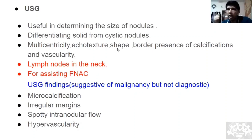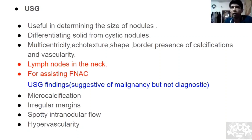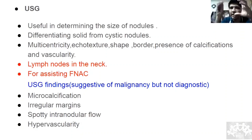Indications for ultrasound-guided FNAC: three — too small, too big, or heteroechogenous. If too small, you'll miss the nodule and sample normal follicular cells. If too large, the central area may be necrotic — FNAC from the center gives only dead cells. So under ultrasound guidance you can target exactly the right area. If heteroechogenous (mixed solid and cystic), take from the solid component, not the cystic part which yields only fluid.